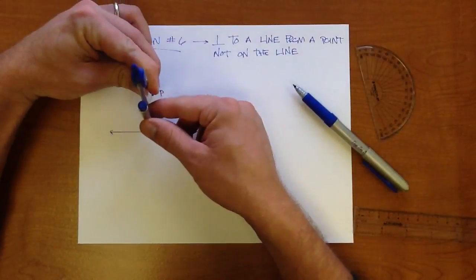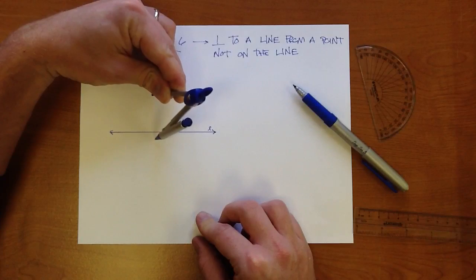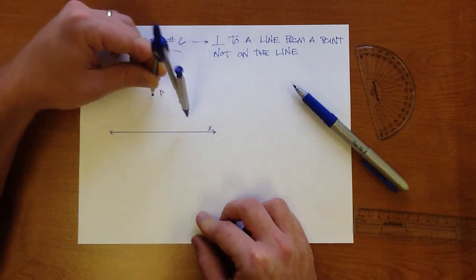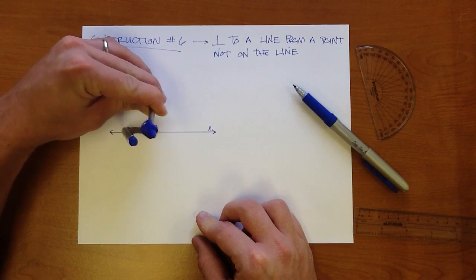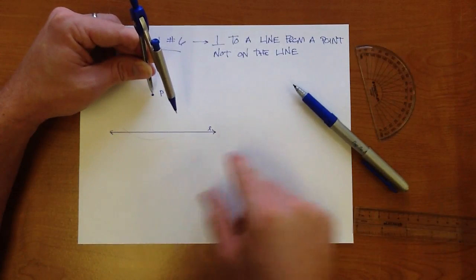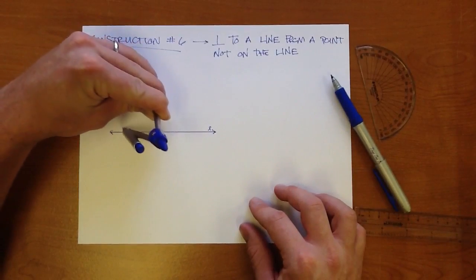The first thing you're going to want to do is you're going to want to take your point of your compass, and you're going to want to stretch your compass out so that the distance from point P on your compass is a little bit further, or is further than line L. So if you were to draw an arc, you're going to end up getting two intersection points here across line L. So I'm going to make that line a little darker so it's easier to see.